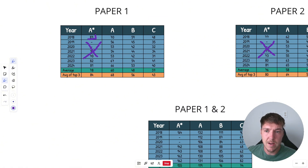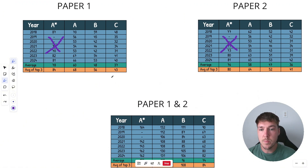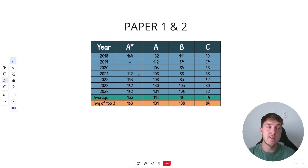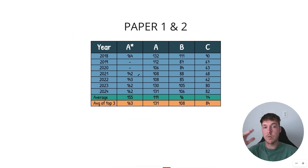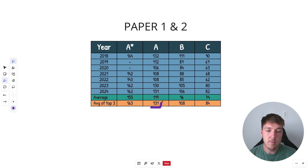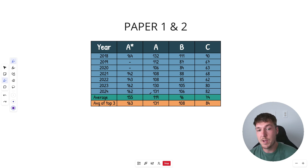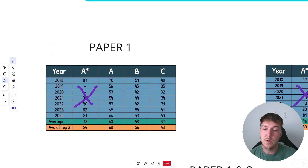2018 was a bit of an outlier as it was the first year. I'd say low to mid 80s for an A* and mid to high 60s for an A. This is paper one and two combined — broadly the same topics across both pure papers. If you're going for an A* overall on the combined papers, aim for around 160; for an A, around 130. So if you flop paper one you can make it back with paper two, or vice versa.